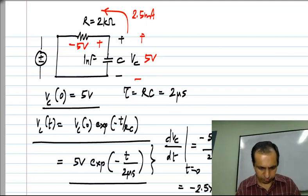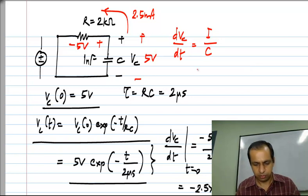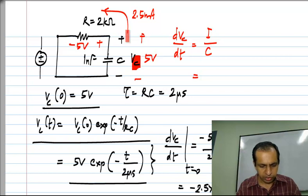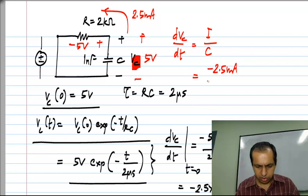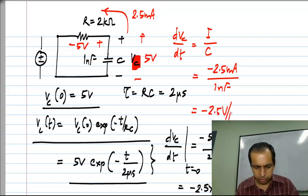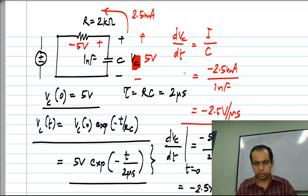And we know that the rate of change of capacitor voltage is the current divided by the capacitance. The current, if you take the signs for Vc this way and by passive sign convention, the capacitor current is minus two point five milli amperes and C is one nano farad. So, this will come out to be minus two point five volts per microsecond. So, you can see directly from the circuit as well, and this is also important to be able to look at the circuit and gauge the answers.